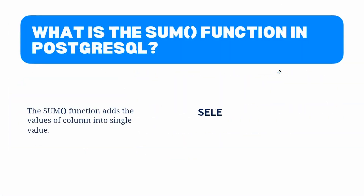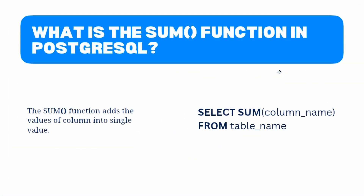Let's begin by understanding what the SUM function does. The SUM function is an aggregate function that is used to calculate the sum of column values in a PostgreSQL database. Let's start by looking at the syntax of the SUM function. The basic syntax is as follows.